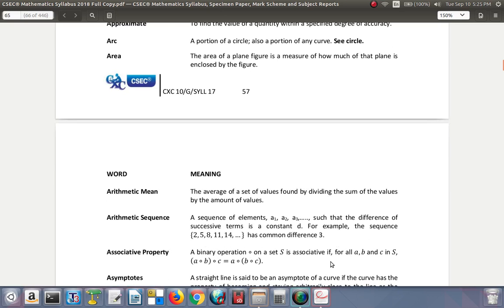Area: the measure of how much of a plane is enclosed by a figure. Arithmetic mean: the average of a set of values found by dividing the sum of the values by the number of values. To find the arithmetic mean, add up all the values and divide by how many values there are.